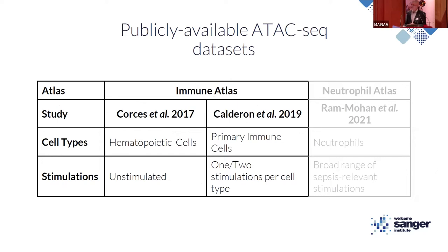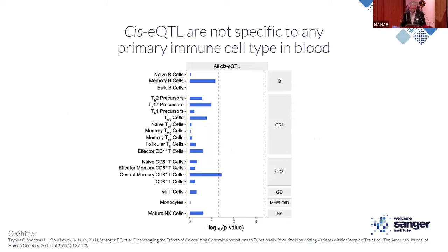I've been retrieving publicly available ATAC-seq data to better understand which cell types might be dysregulated in this disorder. I started by identifying an immune atlas from Corses et al. 2017 and Calderon et al. 2019, consisting of hematopoietic and primary immune cell types relevant to sepsis. We were particularly interested in stimulated cell types, believing stimulation would recapitulate some of the biology seen in the septic condition. I used a method called GoShifter to test for enrichment of cis-eQTL in these primary immune cell types.